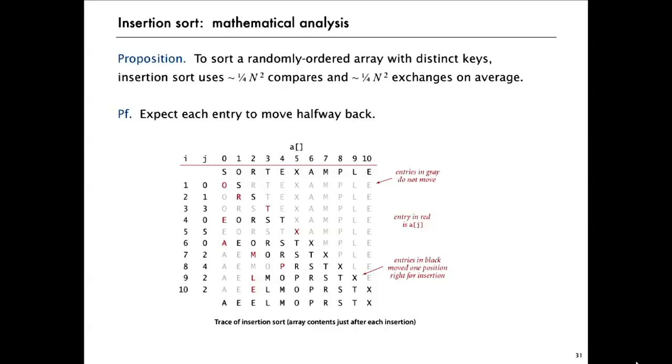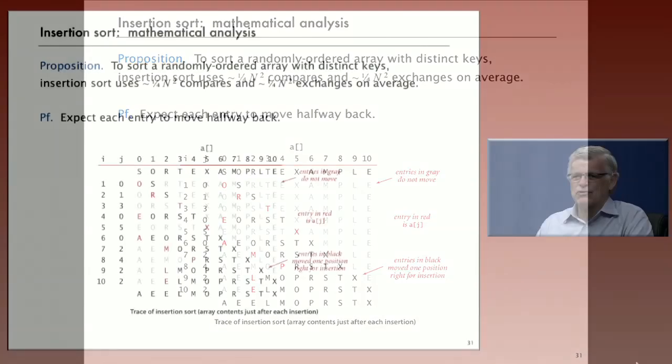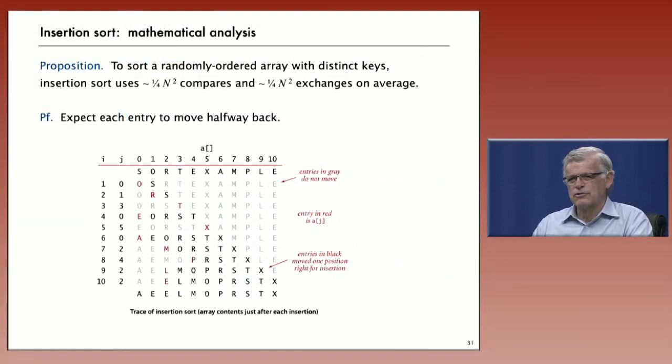What about the analysis of insertion sort? It's more complicated. Our proposition says that insertion sort, to sort randomly ordered array with distinct keys, it'll use about 1 quarter n squared compares, and about the same number, 1 quarter n squared exchanges on the average. This is more complicated to prove. It depends on the array being randomly ordered.